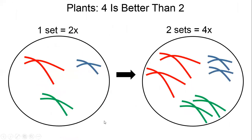What happens very rarely is that due to an error during cell division, the number of chromosomes — the genetic information, the number of instruction booklets — is not divided between the two cells. Here I'm showing one cell with six chromosomes and the other one with twelve: four green, four blue, four red instead of two of each. This one with 2x we call diploid, and this one with 4x we call tetraploid.